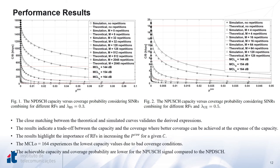In this slide, we present the comparison between the simulation results and the theoretical ones derived through the proposed model. The left figure plots capacity versus coverage probability considering different repetition factors for the narrowband downlink shared channel. The right figure plots capacity versus coverage for the narrowband uplink shared channel. The close matching between the theoretical and simulated curves validates the derived expressions. These curves illustrate the trade-off between capacity and coverage, where better coverage can be achieved at the expense of capacity, or better capacity can be obtained for devices in good coverage conditions.